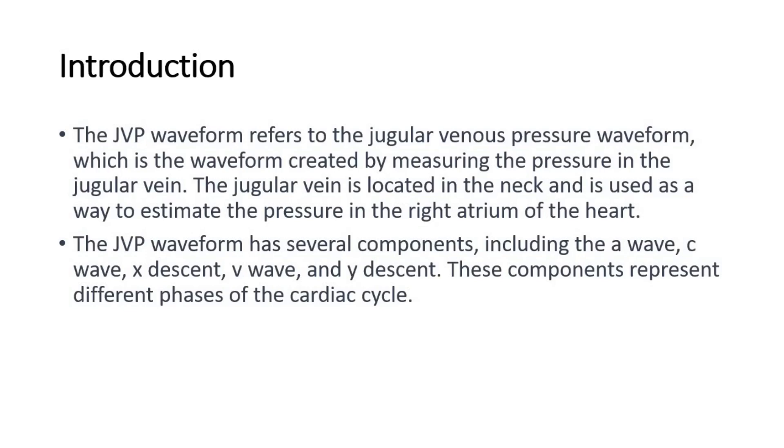The JVP waveform has several components, including the A wave, C wave, X descent, V wave, and Y descent. These components represent different phases of the cardiac cycle.